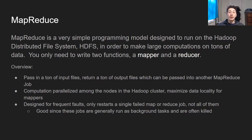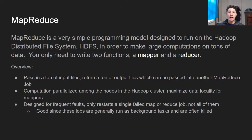MapReduce is also designed for frequent faults. Originally, when Google created MapReduce, they used it as background tasks on their servers, and oftentimes they would have to preempt those tasks if they needed more resources for production. So if one mapper or reducer job fails, it doesn't reset every mapper or reducer job — you can just retry that one later.